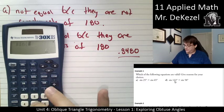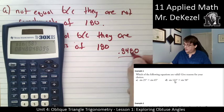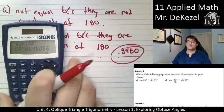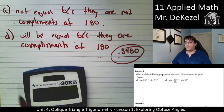Sine of 122 equals .8480. Just want to write that down so that I remember. And then the sine of 58, .8480. So those are the same. So we were right. With D, because they are complements of 180, they will be equal.